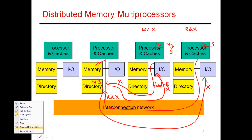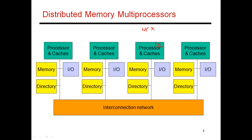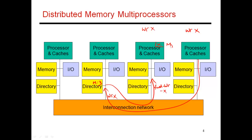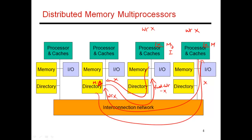Now let's look at another example. Node 3 had done a write, so x is in modified state there and the directory says modified in node 3. Node 4 is now trying to do a write into x — it has a miss and sends a request saying it's trying to do a write of x. The directory realizes this needs to be forwarded to whoever has the latest copy, so the forward goes to node 3. Node 3 downgrades x to invalid and sends a copy of x back. The directory is updated to say modified with node 4, and x is placed in node 4's cache in modified state.